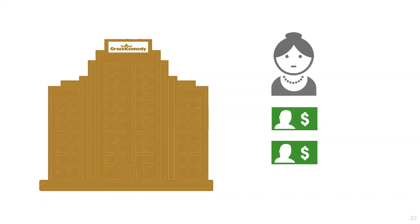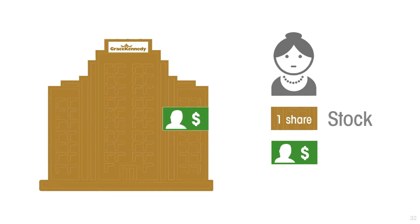One way is that the business can divide its ownership into shares, and it can take some of those shares — a piece of itself — and sell that ownership share to the saver. This is what the stock market is. The stock market, and in particular initial public offerings of shares of companies, are how companies access funds for investment directly from private savers.